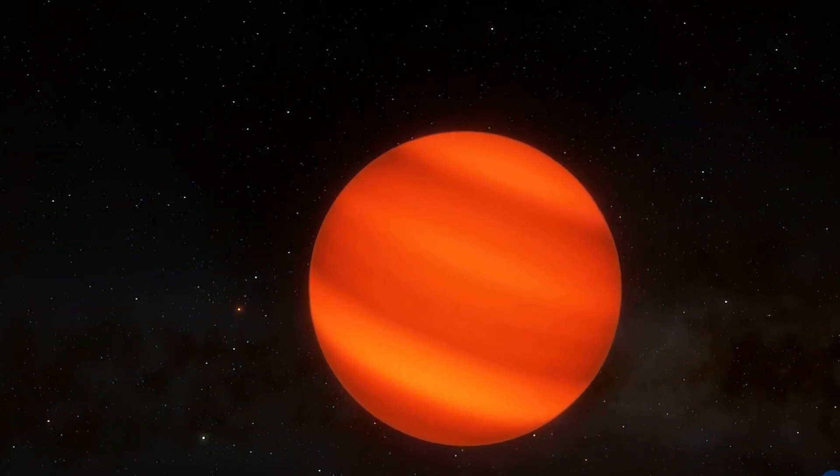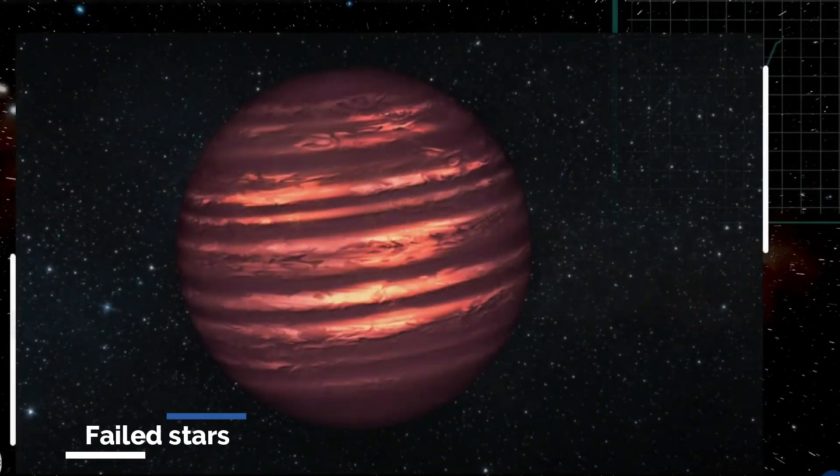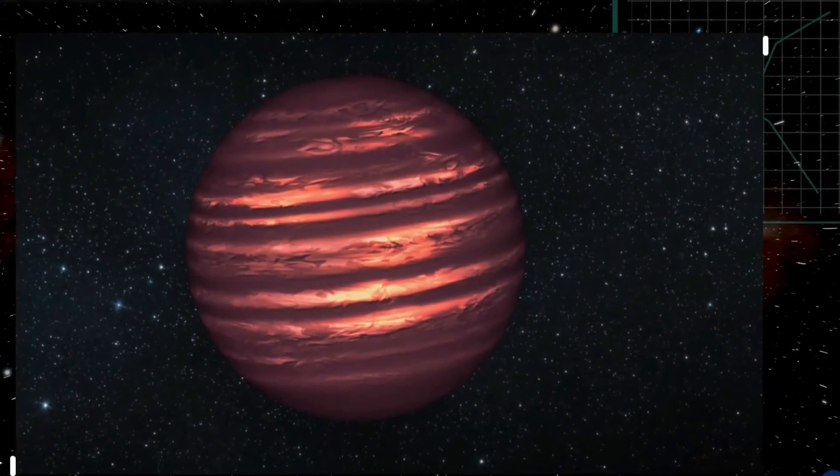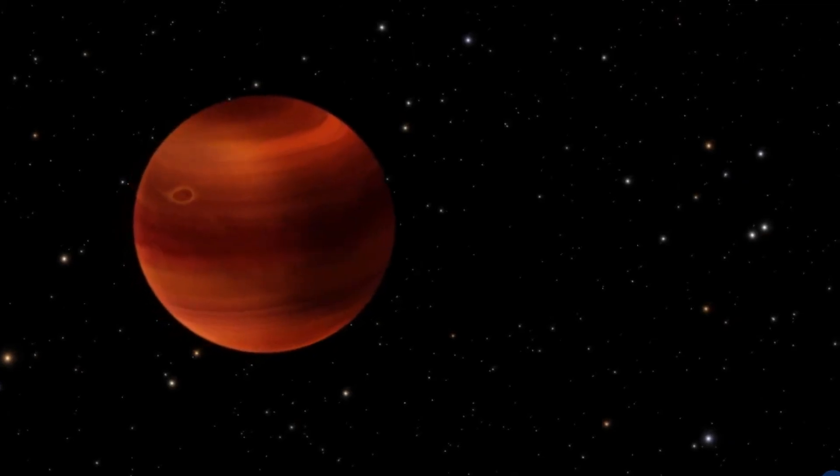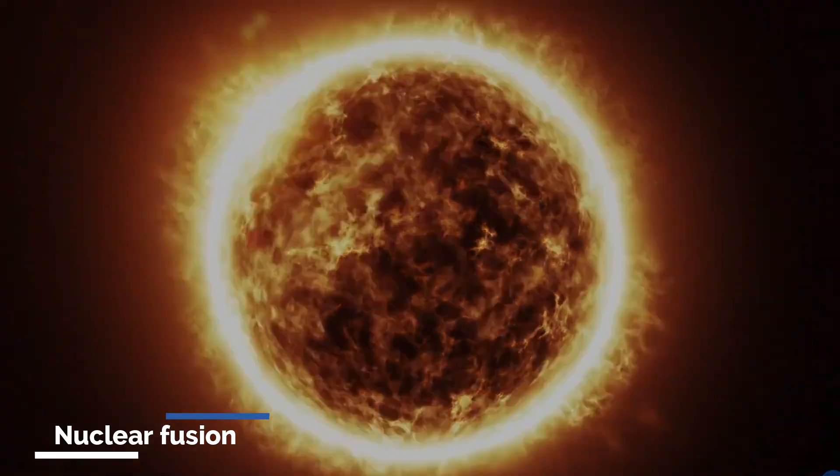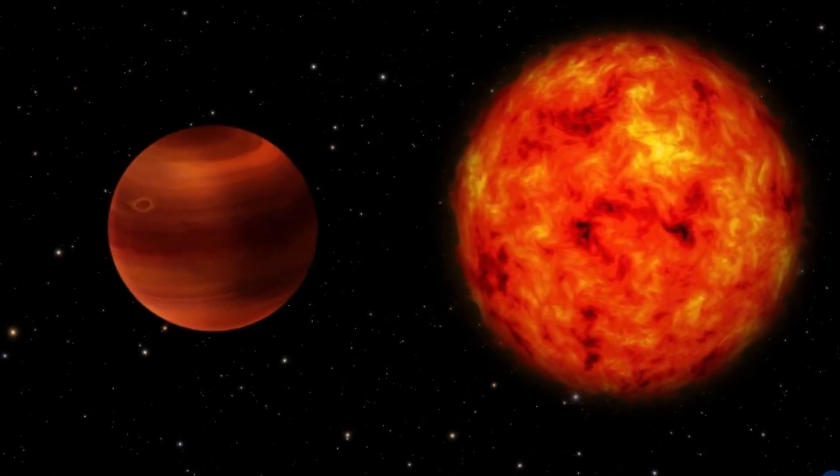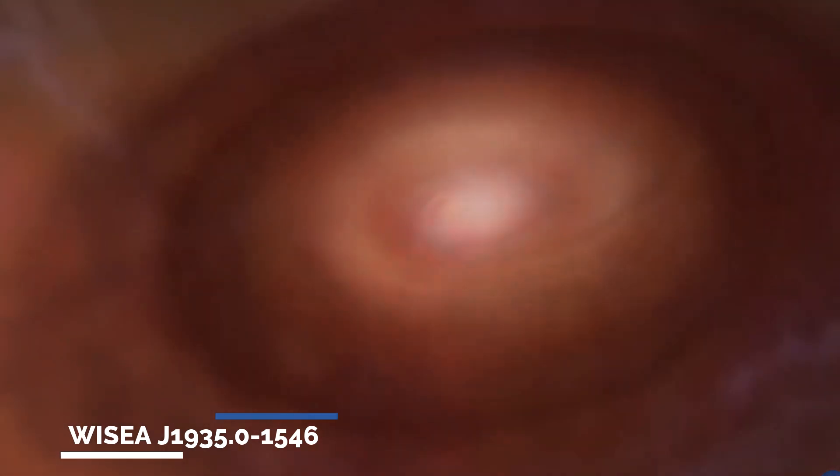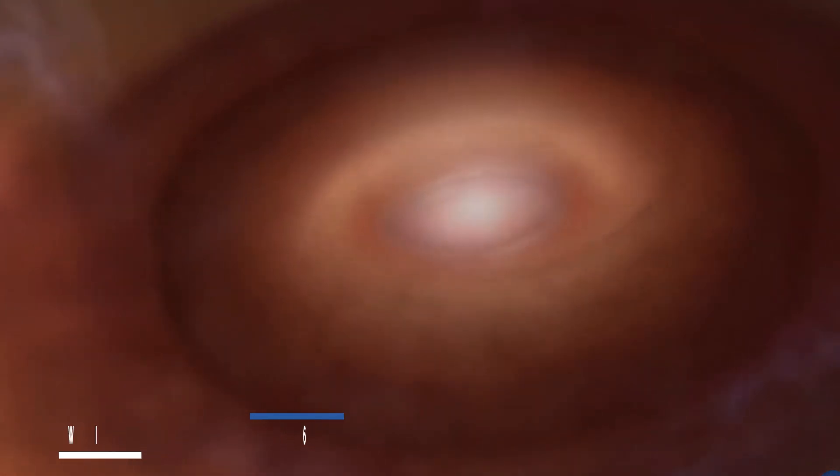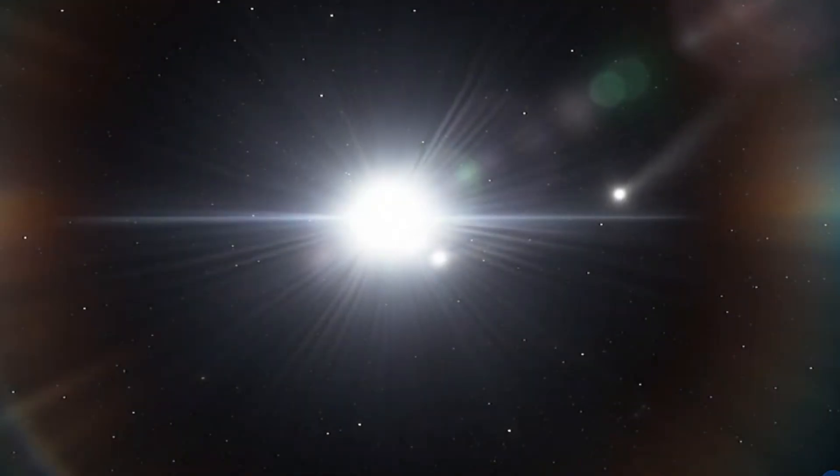Brown dwarfs, often referred to as failed stars, possess greater masses than even sizable planets like Jupiter but lack the necessary mass to initiate the nuclear fusion processes that sustain stars. The recent discovery involving the brown dwarf WISE 1405+5534 has perplexed astronomers, as it is situated far from any discernible heat sources such as stars.